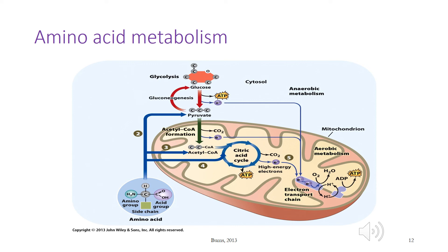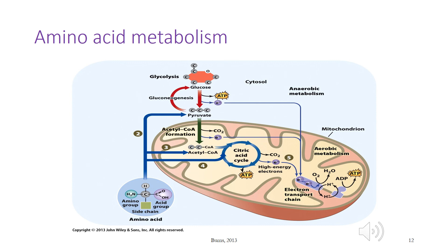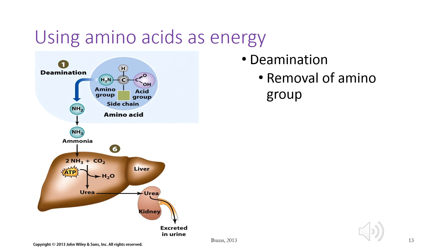Extra amino acids are not stored in the muscle. During times of starvation, protein may be used directly for energy. When amino acids are deaminated, or lose the amine group, the nitrogen is converted by the liver into the waste product urea, which is excreted by the kidneys.